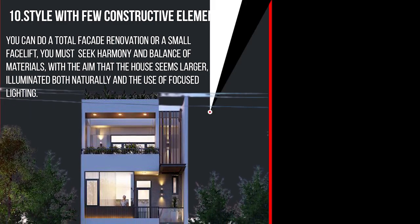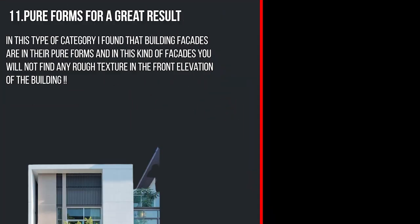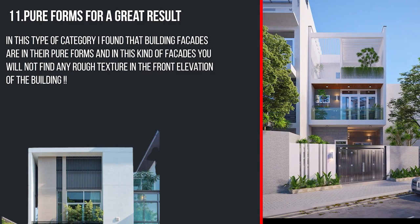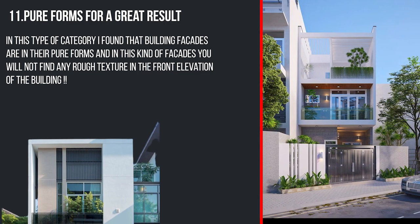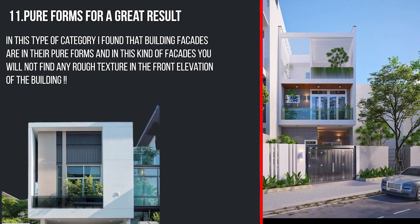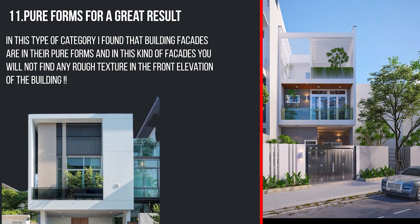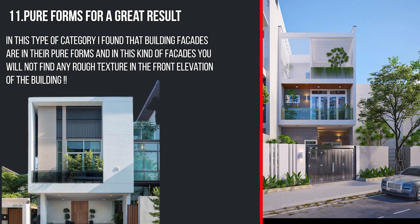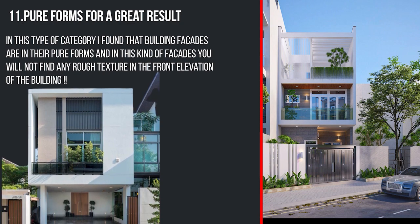The eleventh type is pure form for great results. In this category, building facades are in pure form and you will not find any rough texture in the front elevation of the building.